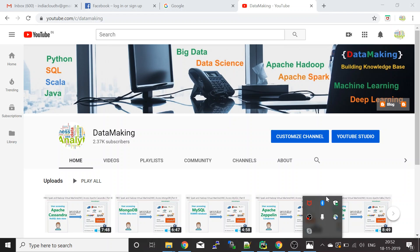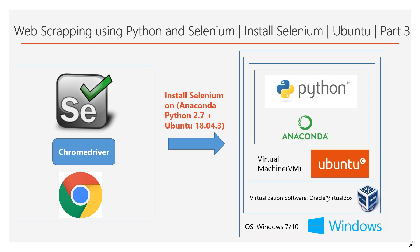Hello friends, welcome to my channel Data Making. This is the next video in the web scraping using Python and Selenium video series. Last video we saw how to install Python version 2.7 on the Ubuntu operating system, which is my virtual machine. In this video we are going to see how to install the Selenium Python package.